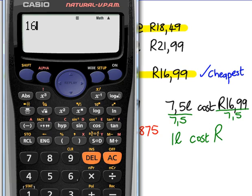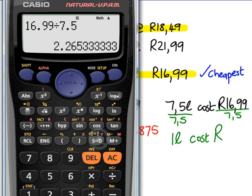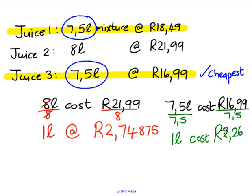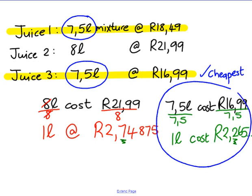$16.99 divided by 7.5 equals $2.265 and so on. I realize I don't have to write any more decimals down. They both cost $2 something, but juice two is $2.74, which is greater than $2.26. So the cheapest one is going to be juice number three.